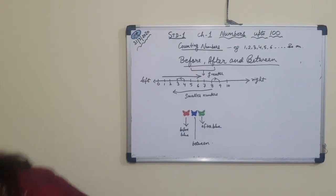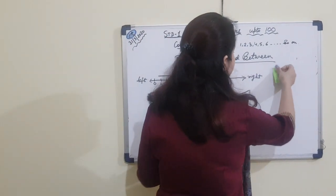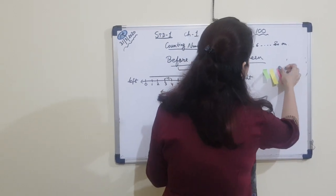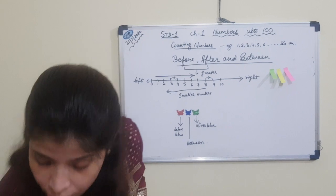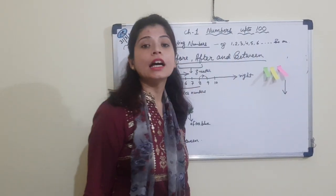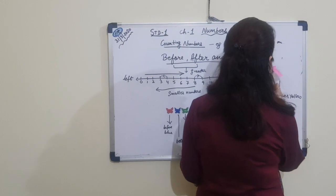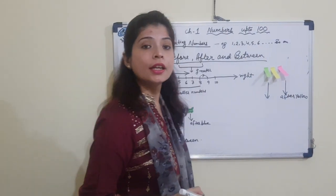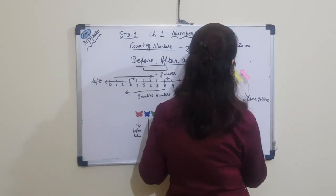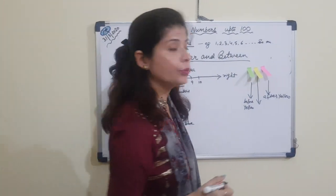I will show you another example. Suppose I have three people of different colors. What is the position of the pink one? It is after yellow. The green one is before yellow. And the yellow one is in between pink and green.